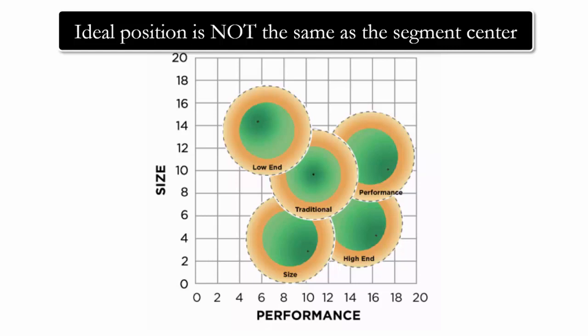For example, the ideal spot for the high-end market is ahead of the segment circle, as customers in the high-end segment have a strong preference for higher-performing products. The ideal spot for the low-end segment trails the segment center, as customers in the low-end segment are very price-sensitive and prefer a lower-performing product at a lower price. You can find information on the ideal spot offsets in the Industry Conditions Report.